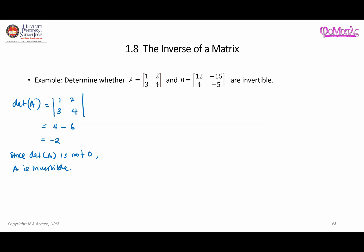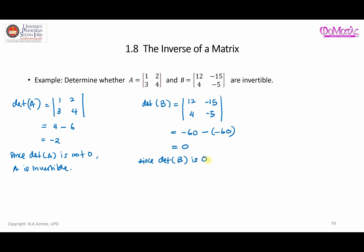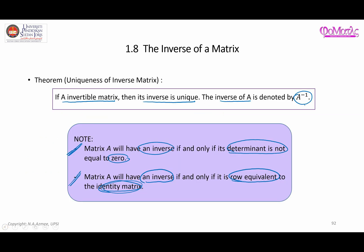For matrix B, finding the determinant of that 2×2 matrix gives -60 minus (-60) — the result is zero. Since det(B) = 0, we conclude that B is non-invertible. So we use this process to determine whether a particular matrix has an inverse.